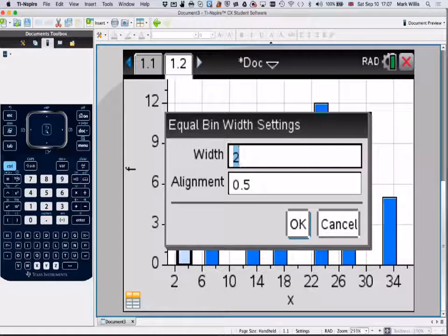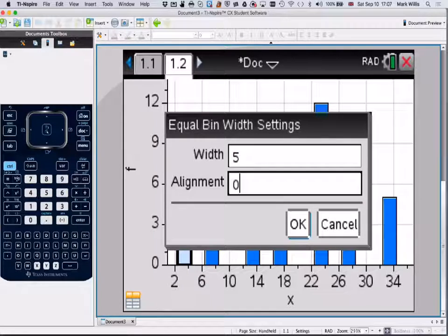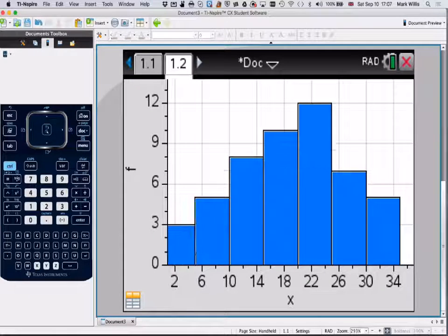We want the width to be the same as the boundary. It went from 0 to 5, 5 to 10. So, it needs to be 5. And put the alignment at 0. And then, press OK. And we get the bar chart that we want.